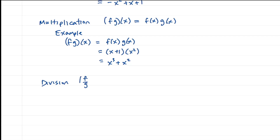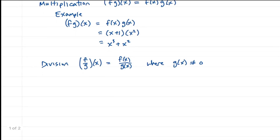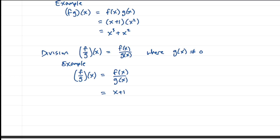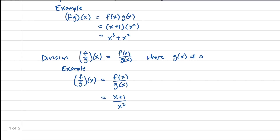Lastly, we have division. For this one, f divided by g of x equals f of x divided by g of x, and we need to specify where g of x is not allowed to be zero. In our example, f divided by g of x is f of x divided by g of x, which is x plus 1 over x squared. We would not allow x to be zero because that would result in division by zero, so we say where x is not equal to zero.